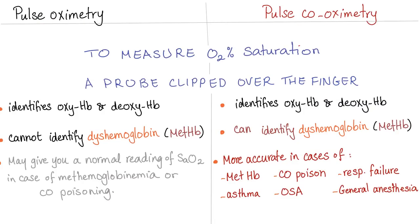The difference between pulse oximetry and pulse co-oximetry: both use a probe clipped over your finger. Pulse oximetry can quantify oxyhemoglobin and deoxyhemoglobin but cannot identify dyshemoglobins like methemoglobin. Pulse co-oximetry can identify dyshemoglobins such as methemoglobin. So if we suspect methemoglobinemia, we should use pulse co-oximetry.